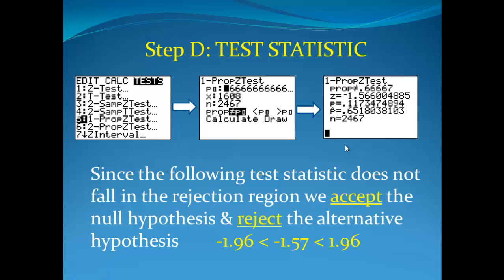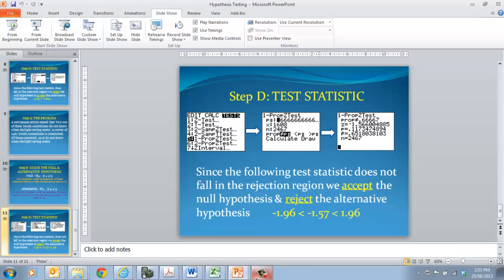Because that value there is not less than negative 1.96, that falls actually in the acceptance region. So we have to reject the alternative hypothesis there. Hopefully that actually helps you. I've just got another one quickly to show you, another example on another PowerPoint.